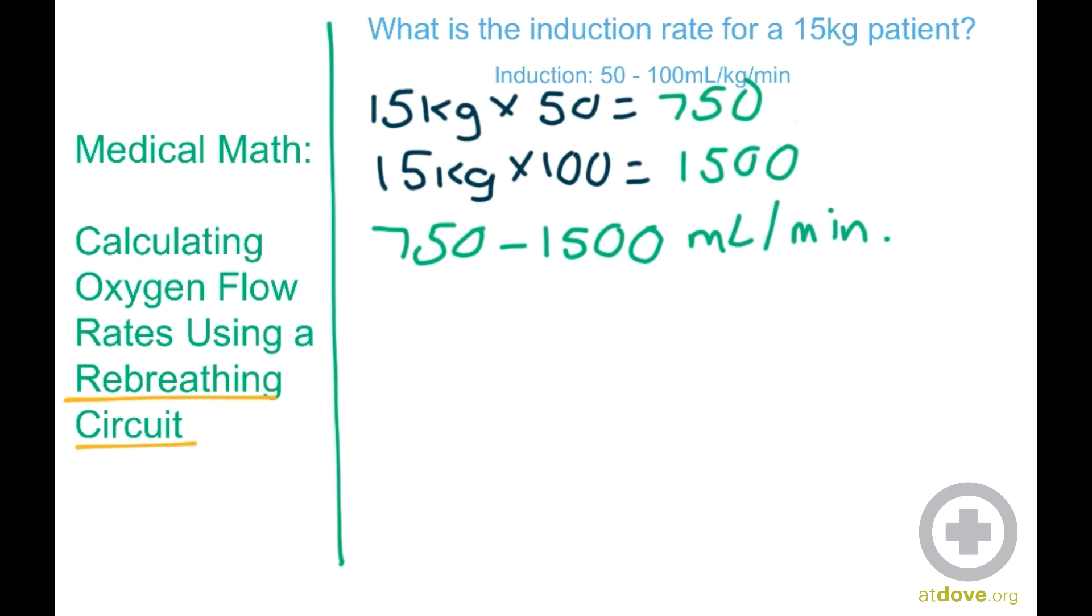Now, you may wonder where I got those numbers to fill in that formula. So the 15 kilogram is the weight of our patient. So that is a set number in both of those formulas. And then since this is an induction range, we're going to have a high and a low to figure out. So I got the 50 from there, which is the low range, and the 100 is the high range.